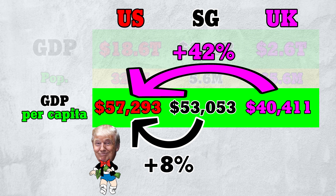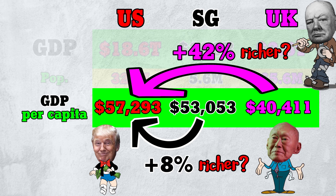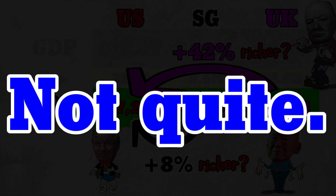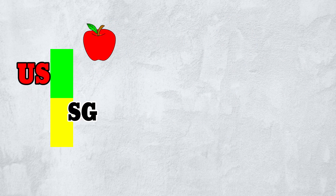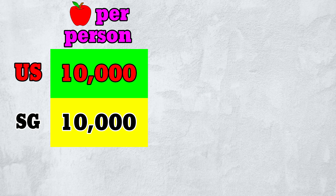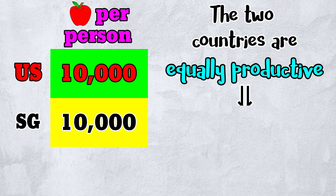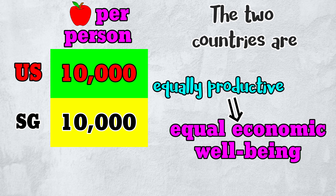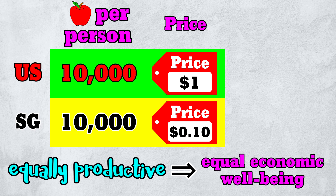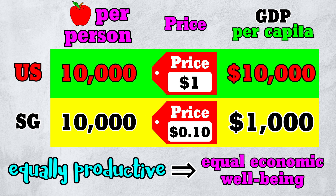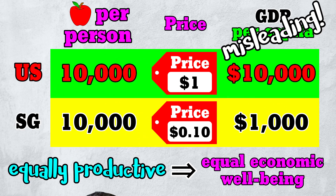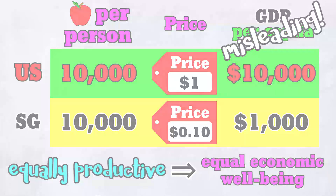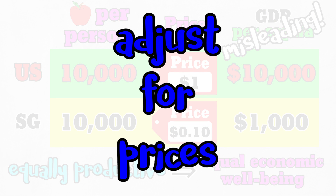Can we say the US is 8% richer than Singapore and 42% richer than the UK? Not quite. Imagine again that the US and Singapore both produced only apples, and each country produced an average of 10,000 apples per person. Since the two countries are equally productive, we'd expect equal economic well-being. But if apples cost $1 in the US but only 10 cents in Singapore, then GDP per capita would be 10k in the US but only 1k in Singapore — not what we were expecting. The GDP per capita measure can be misleading when prices are very different. For a better comparison, we must also adjust for prices, which brings us to Step 3.